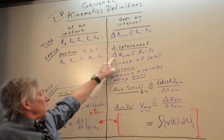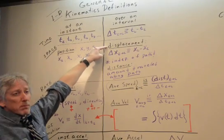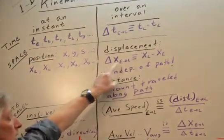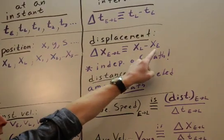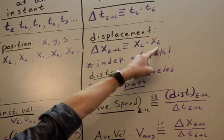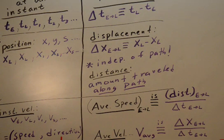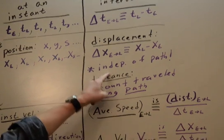And of course, the change in position is called displacement. Does it matter how I get from one place to another? Well, no. I've got the later minus the earlier. However I got there doesn't matter. My change in position is my change in position. It's where I started and where I ended. It's independent of the path.